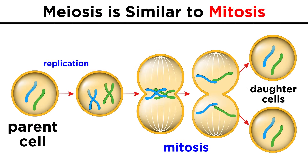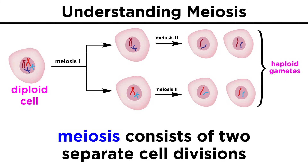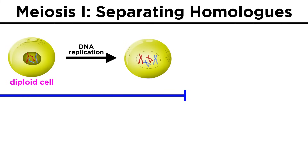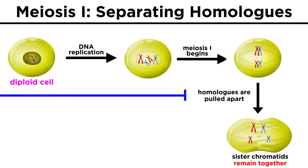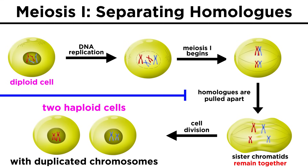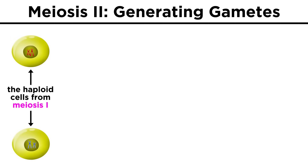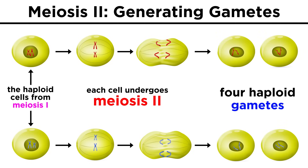Meiosis is similar to mitosis in a lot of ways, and we will assume that mitosis is already well understood while discussing meiosis, so if you haven't yet watched that tutorial, please go back and check it out. The main difference between these processes is that meiosis consists of two cell divisions rather than one. These are called meiosis one and meiosis two. In meiosis one, homologous chromosomes — one maternal and one paternal — duplicate and are separated during cell division to produce haploid cells with duplicated chromosomes. Then in meiosis two, these haploid cells divide again to produce four haploid daughter cells, each with just a single set of chromosomes.